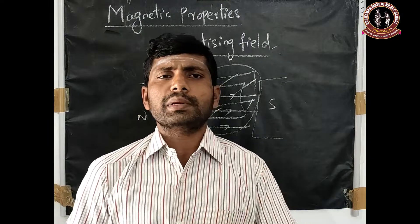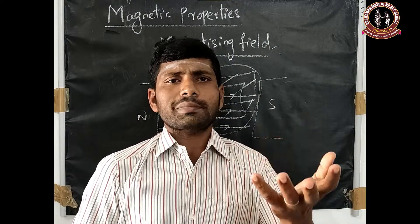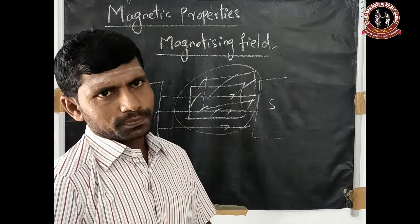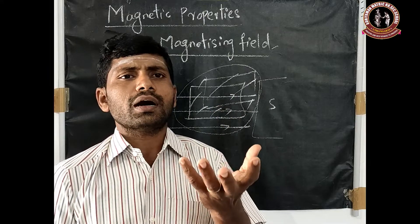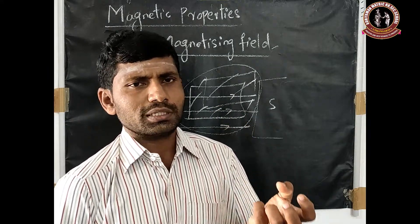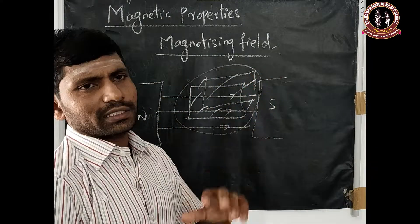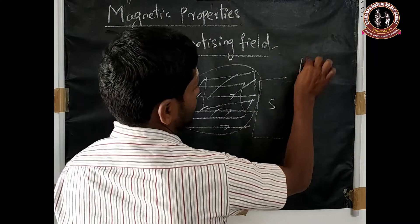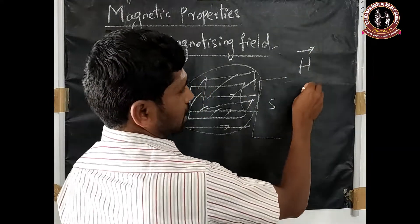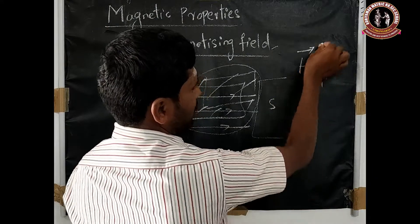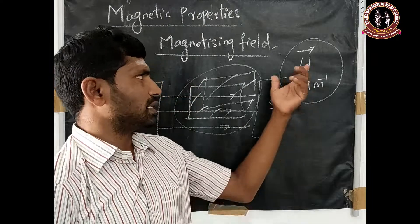The magnetic field used on a magnetic specimen or substance is called the magnetizing field. The magnetizing field is a vector quantity, denoted by the letter H vector. Its unit is ampere per meter (A·m⁻¹).